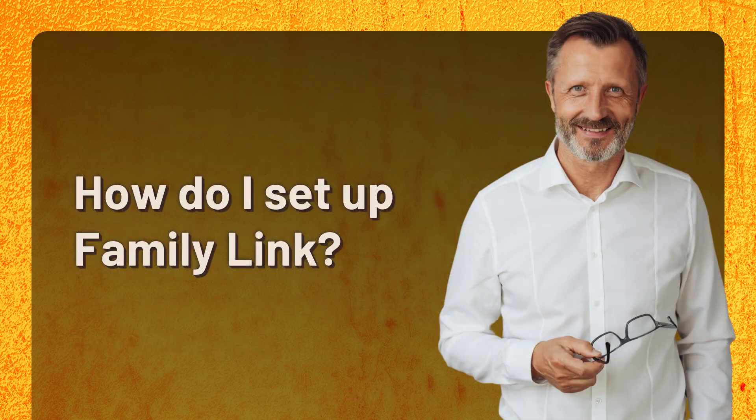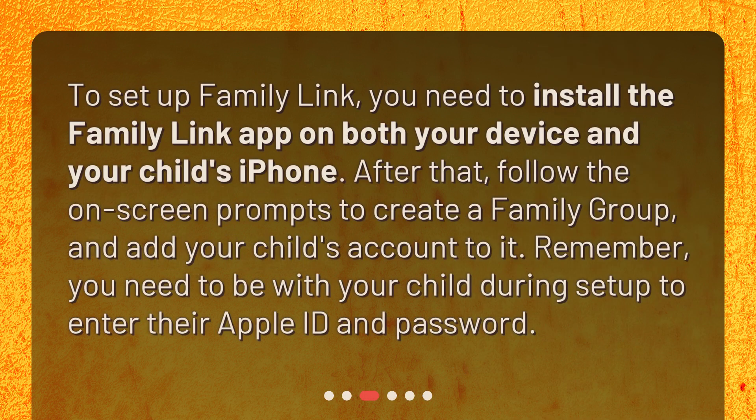How do I set up Family Link? To set up Family Link, you need to install the Family Link app on both your device and your child's iPhone. After that, follow the on-screen prompts to create a family group and add your child's account to it. Remember, you need to be with your child during setup to enter their Apple ID and password.